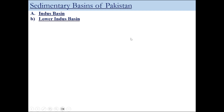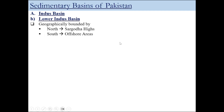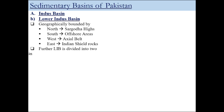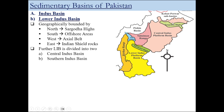The lower Indus Basin is geographically bounded to the north by the Sargodha High, to the south by the offshore area, to the west by the axial belt, and to the east by the Indian Shield rocks. The lower Indus Basin is further subdivided into the central Indus Basin and the southern Indus Basin. Looking at the map: above the Sargodha High is the central Indus platform basin, and below the Jacobabad High is the southern Indus Basin — the lower Indus platform basin.